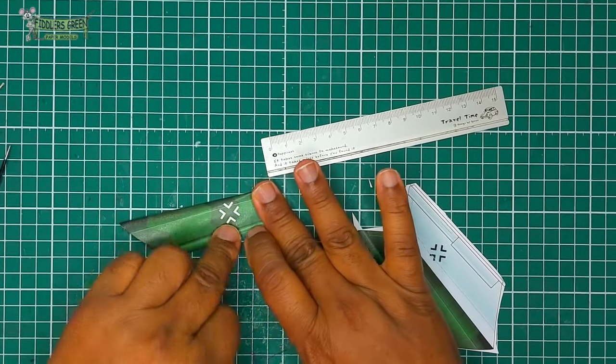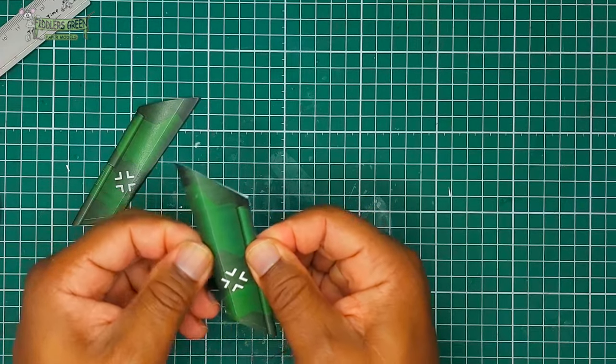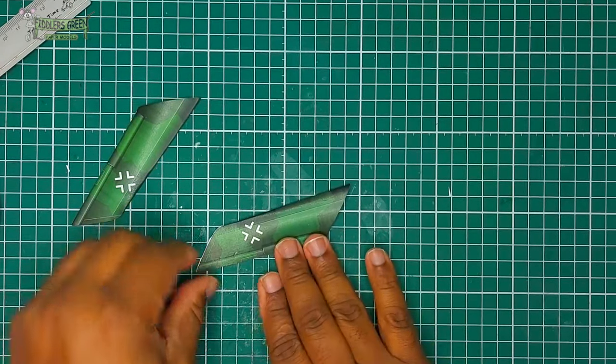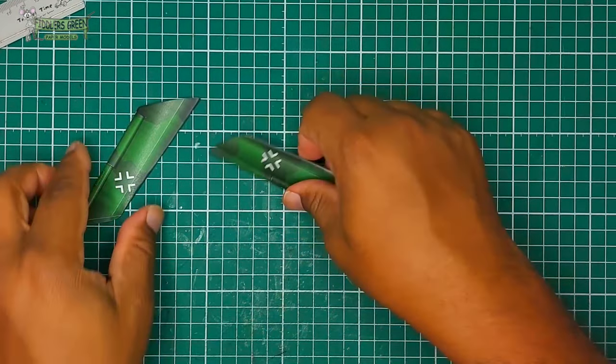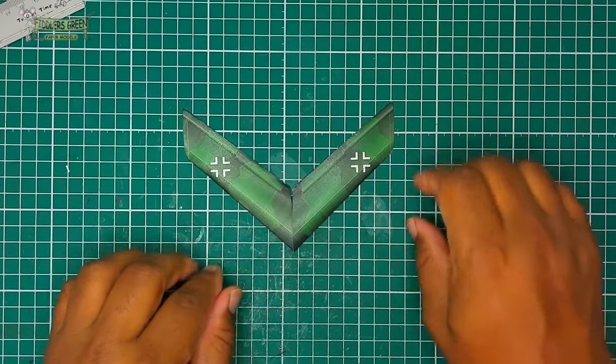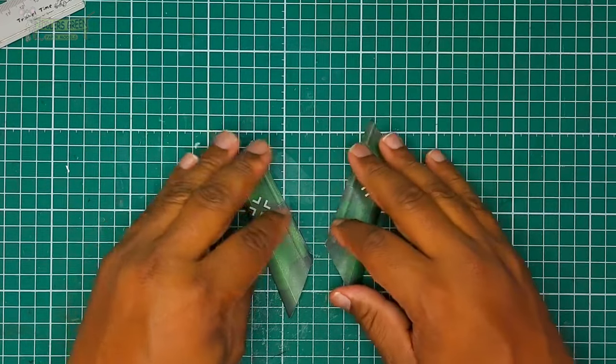And then we glue the trailing edge and the wing tip. On a flat surface, might I add, this does matter to get that trailing edge really looking neat. Any trimming you can do at this point. You have your two wing halves. Pretty neat.